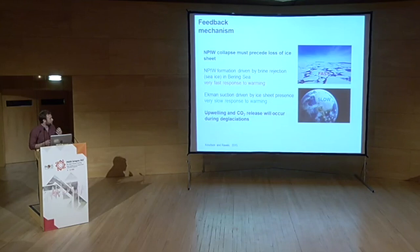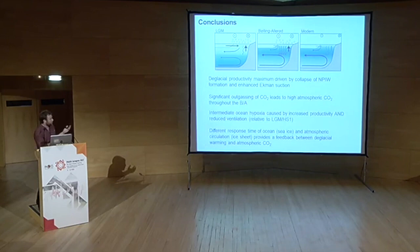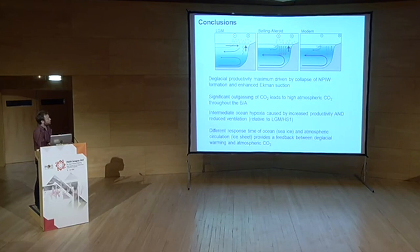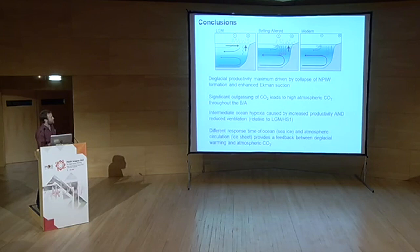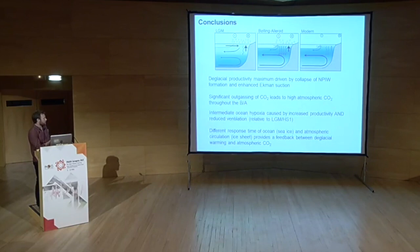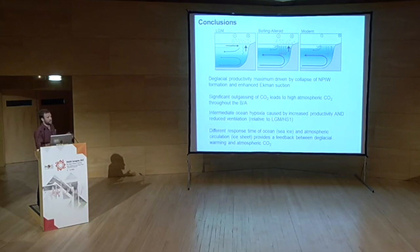Summary: during the LGM, enhanced overturning circulation and more Ekman suction, but upwelling nutrient-poor water — low nutrient supply to the surface. During the Bølling-Allerød, still high Ekman suction but switched to poor ventilation, upwelling nutrient- and carbon-rich waters that outgas to the atmosphere and drive high atmospheric CO2. Intermediate ocean hypoxia was caused by the productivity event combined with reduced ventilation. The different response times of sea ice and ice sheets to warming provides a simple feedback mechanism between deglacial warming and atmospheric CO2.